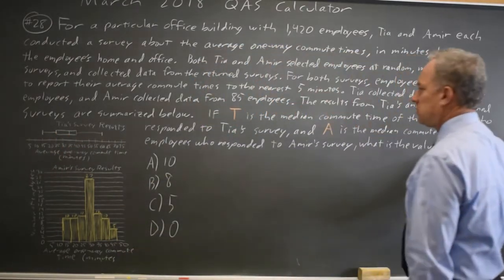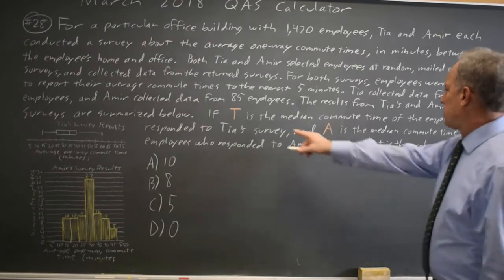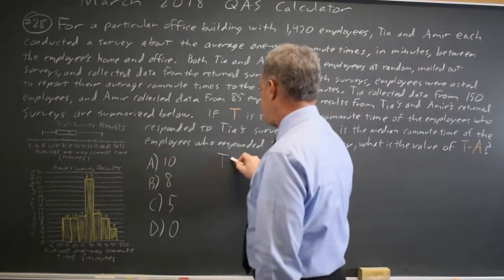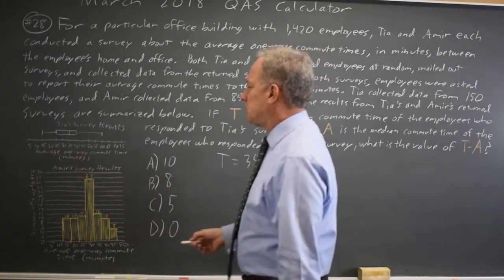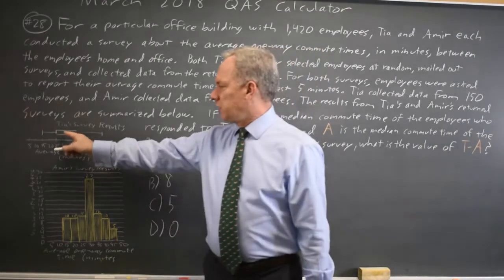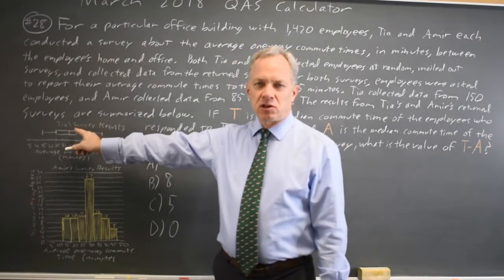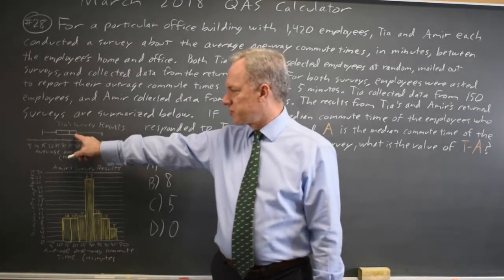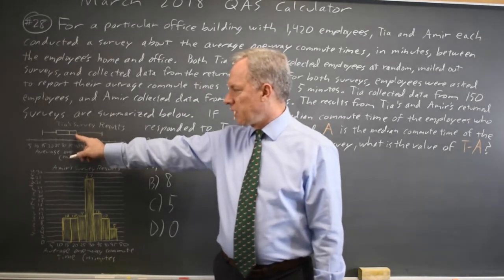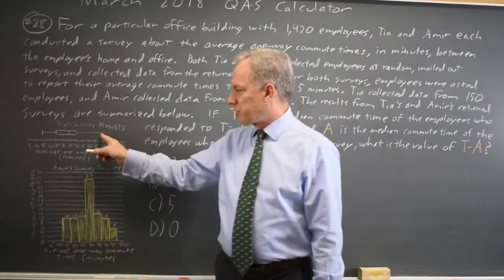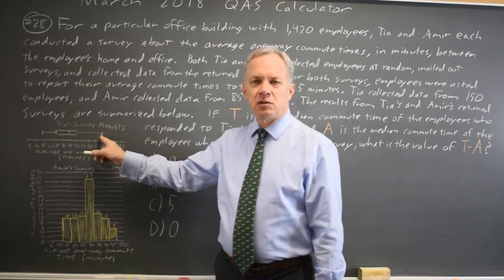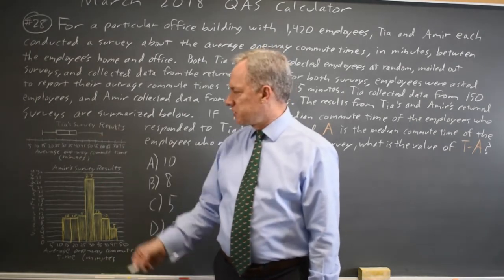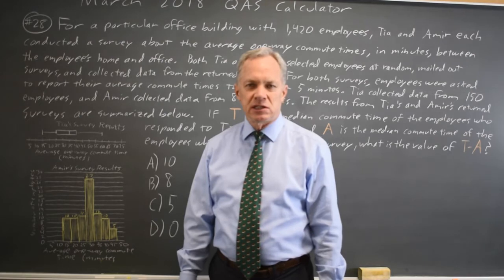So the median commute according to TIA is 35. The end of the rectangle is the third quartile, the 75th percentile, which is 40 for TIA. And the end of the long line where we have a vertical line at the end is the maximum value TIA saw in her survey, which is 60.